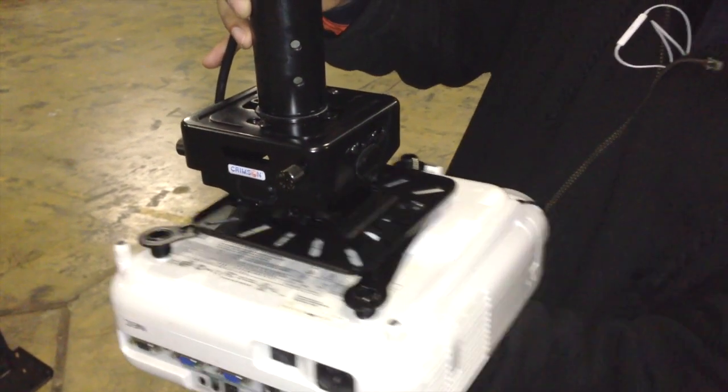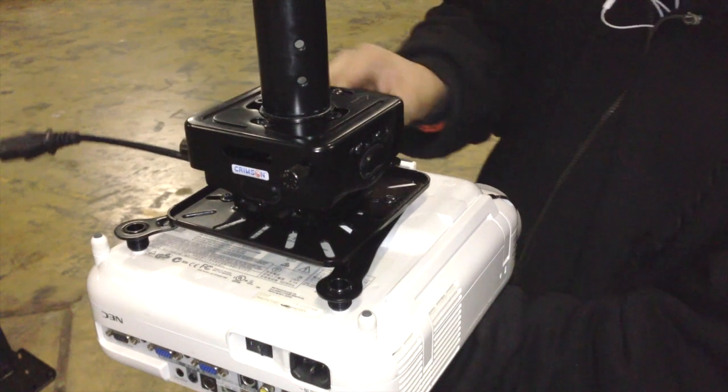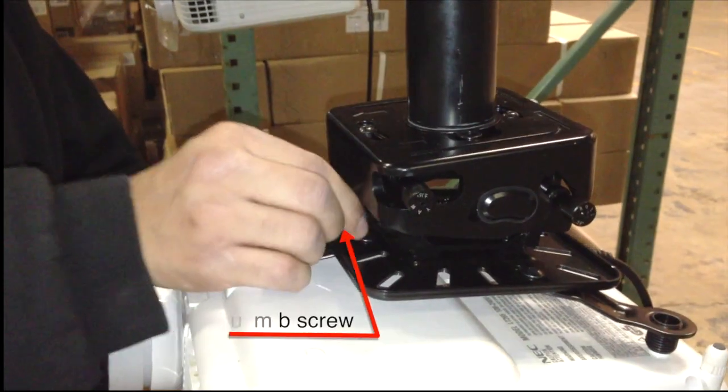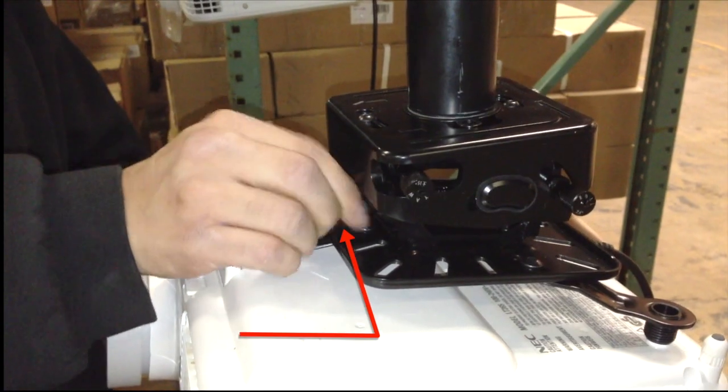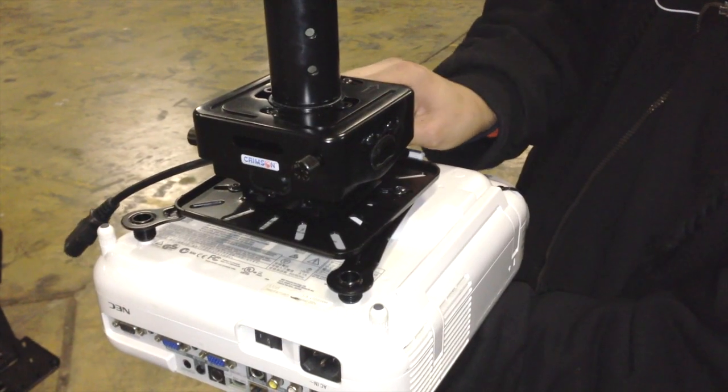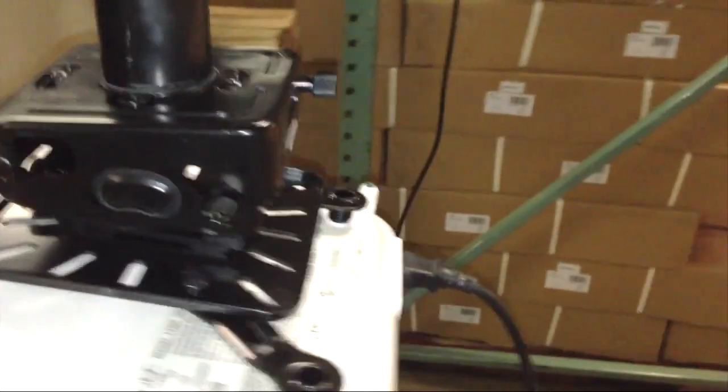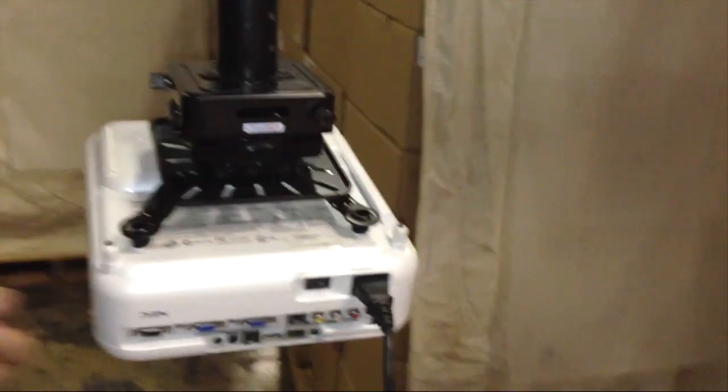Simply slide the projector into the JR3 housing and tighten the pre-installed thumb screw. On the opposite side of the thumb screw, install at least one of the provided security screws.